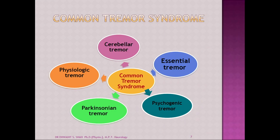What are the common tremor syndromes? Cerebellar tremor, essential tremor, psychogenic tremor, Parkinsonian tremor, and physiologic tremor. To identify all these tremors, we will go through each type in detail.